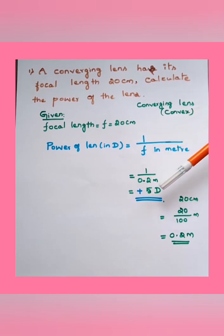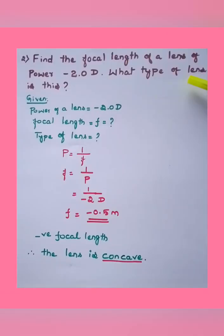We shall move to another sum. Find the focal length of a lens of power minus 2.0D. What type of lens is this? Here two things we have to find - focal length and type of lens. What is given? Power of a lens is minus 2.0D. Focal length f needs to be found, and type of lens also.